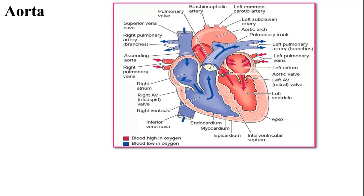The aorta can be divided into several segments: the ascending aorta, the aortic arch, the descending aorta, and finally the thoracic aorta and abdominal aorta. The abdominal aorta is below the diaphragm and the thoracic aorta is above the diaphragm.